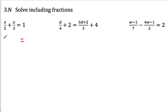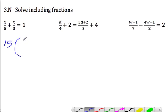Let's get rid of that. So what we're going to do is 15 lots of x over 5, add x over 3, equals, and times this side by 15 as well, equals 15.